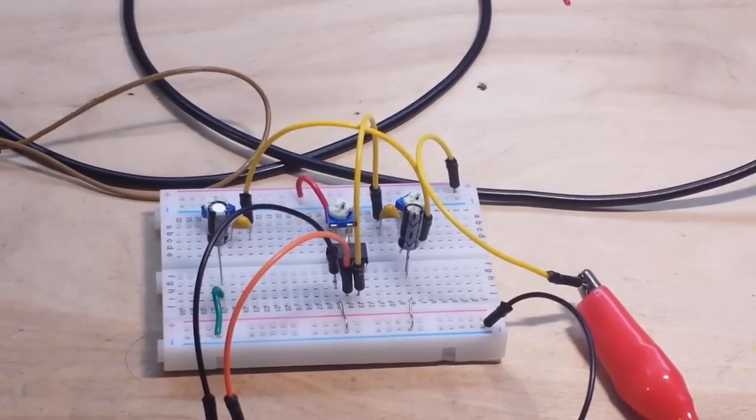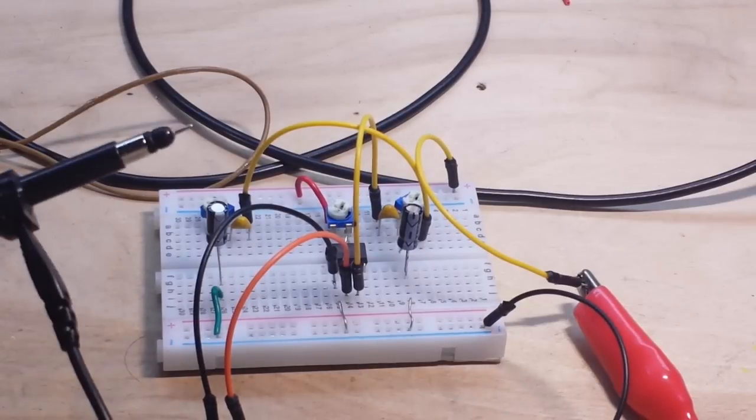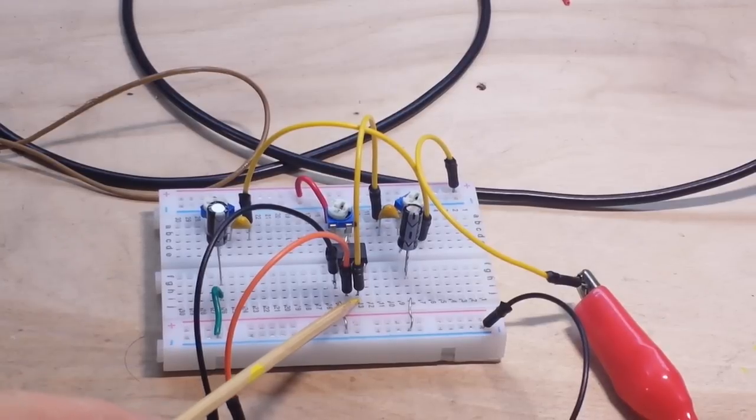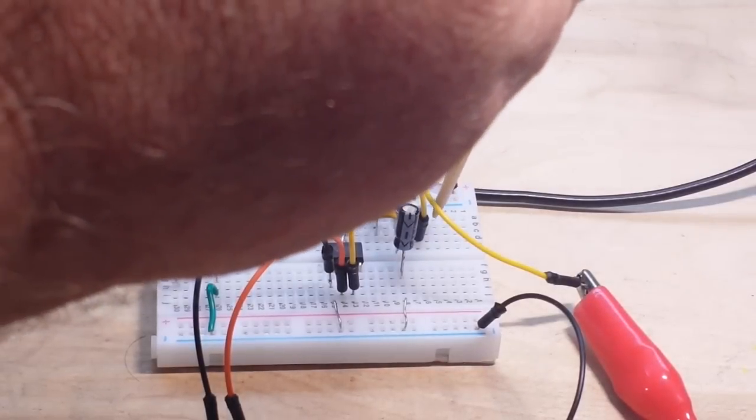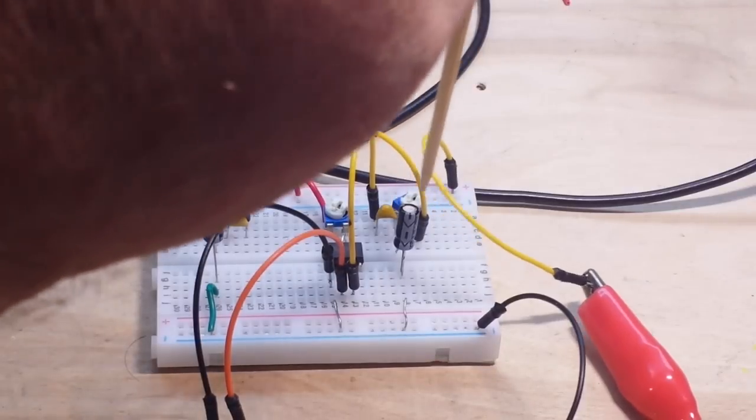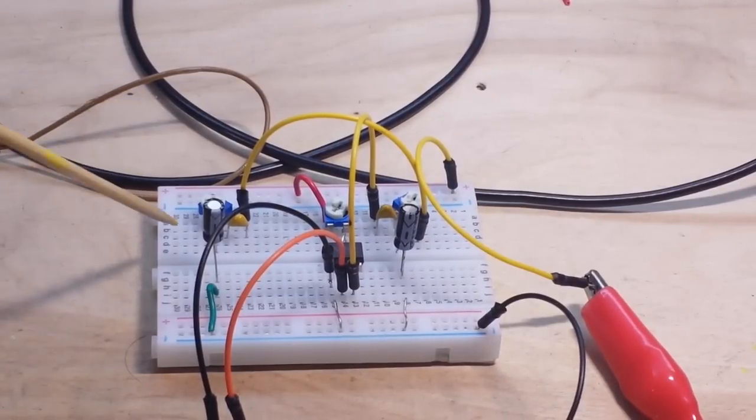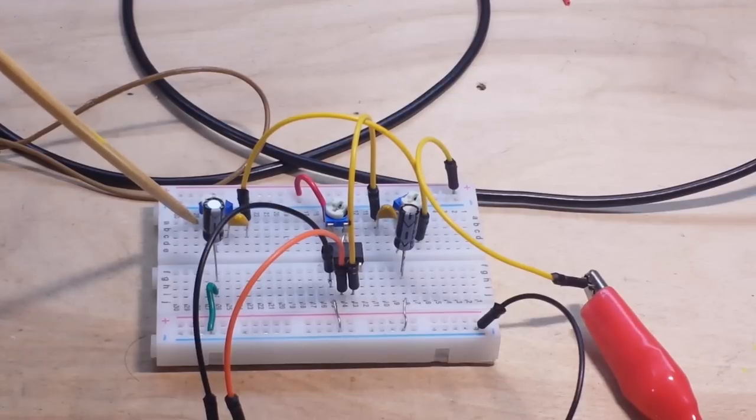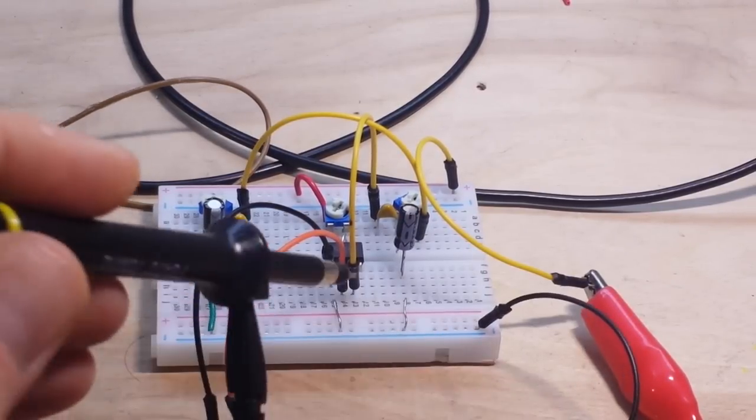I've got everything hooked up here. I'm going to probe the points individually here. We'll be probing pin three, which is our output from the 555 for our square wave. Then we'll be probing over here, which is the output for our first integrator to give us a triangle wave. Then we'll be probing the output over here, which is our second integrator to give us the sine wave. And I've added just a couple of 0.01 microfarad decoupling caps.